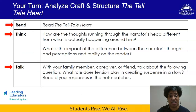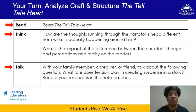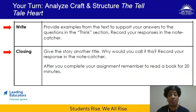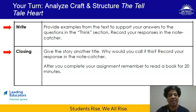Now that I've modeled all of the activities for you, it is your turn to read, think, talk, write. Remember you are thinking through how the narrator's thoughts are different from what's actually happening around him, thinking about the impact of that discrepancy on the reader, having a conversation about tension and the role it plays in building suspense with a family member or caregiver, providing examples from the text in the write section, and finally engaging in the closing activity where you come up with a brand new title for The Telltale Heart. Go back to those four categories if you need a place to start.